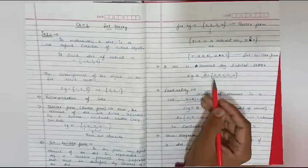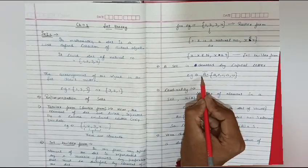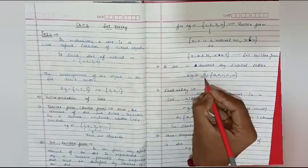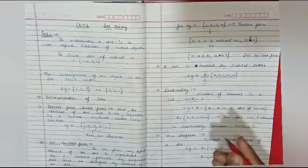A set is denoted by a capital letter. When we denote a set, we denote it by a capital letter. It could be capital A, B, or C.